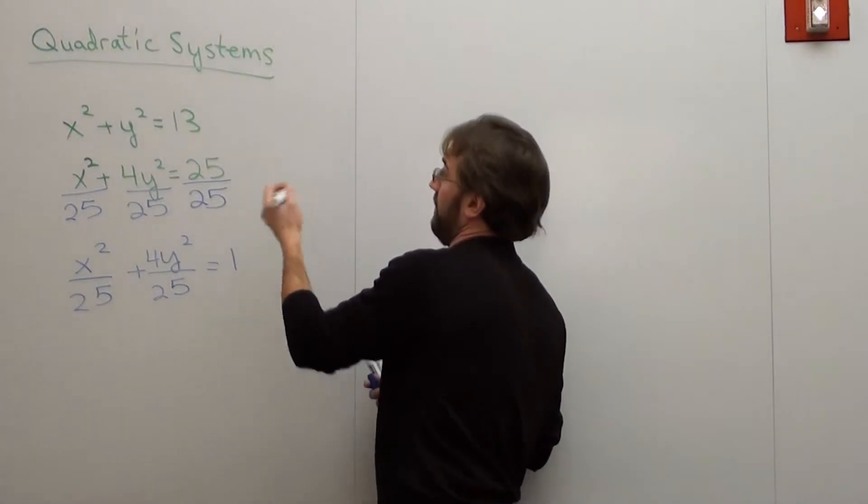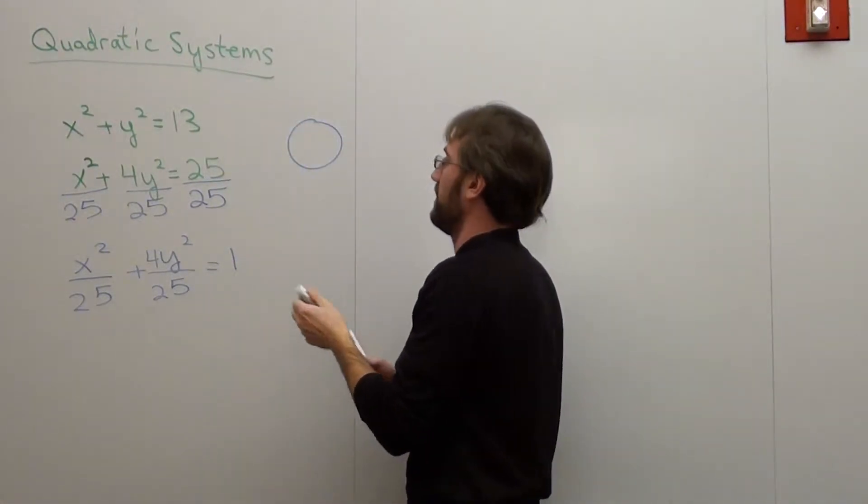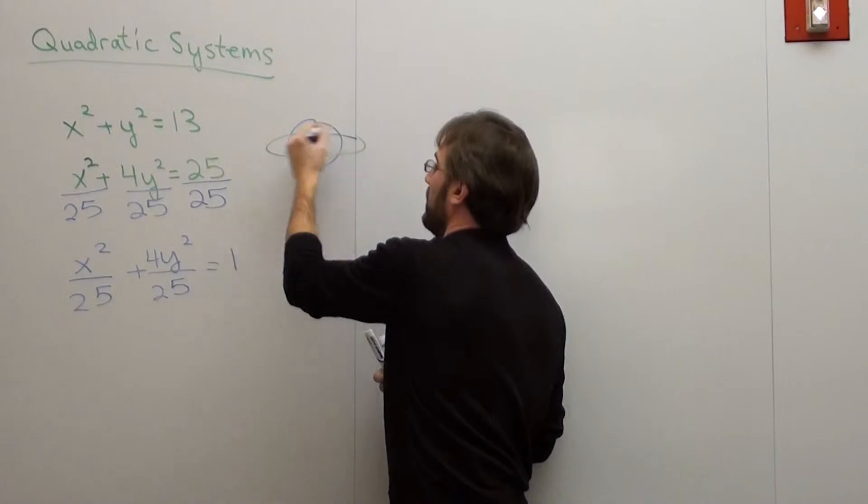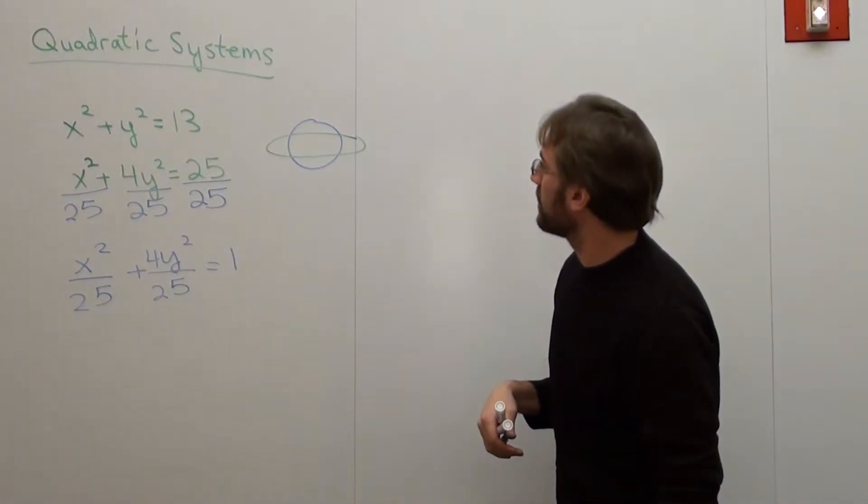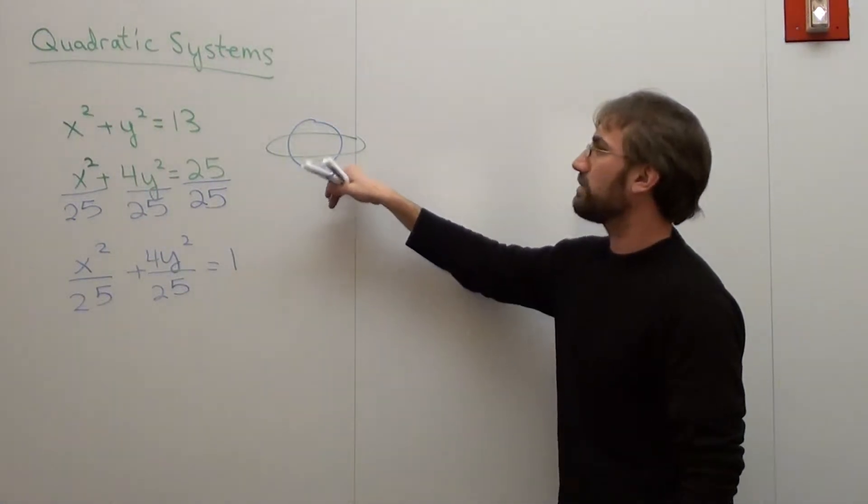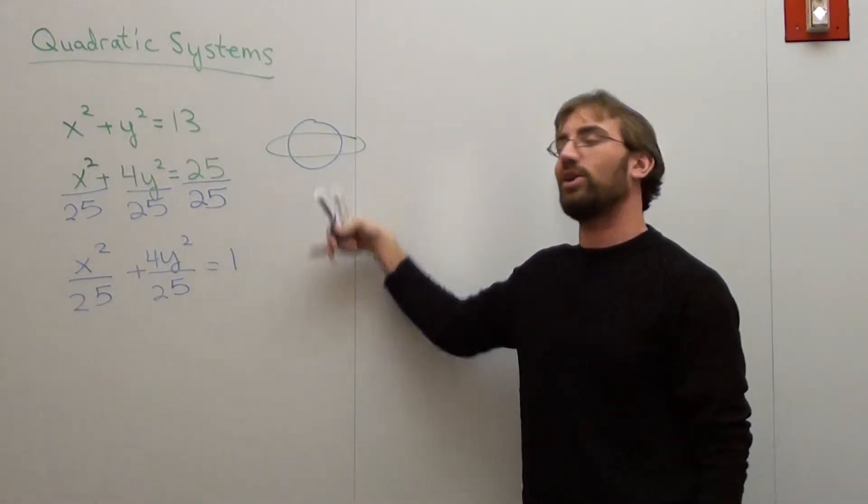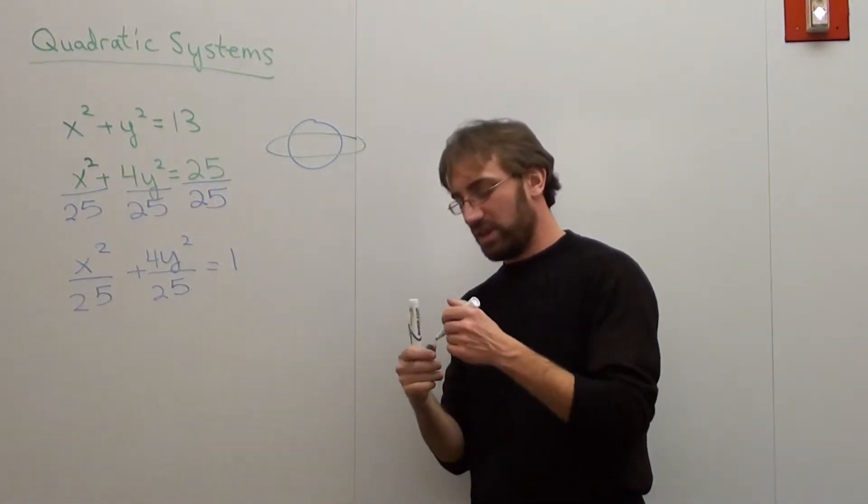So if I were to draw it, maybe it would look something like this. And that's a maybe. I don't really know. Hey, it looks like Saturn. Okay. I don't know where they intersect.